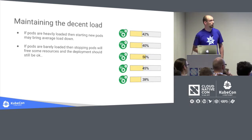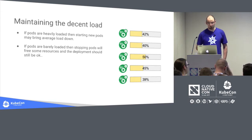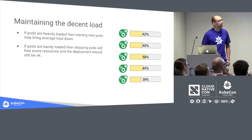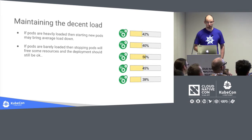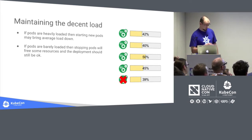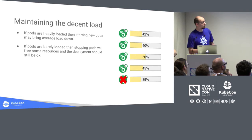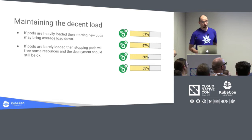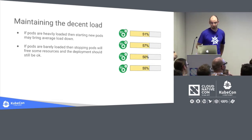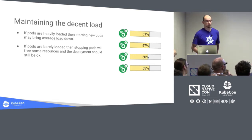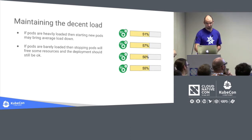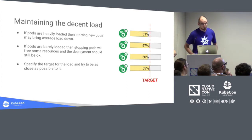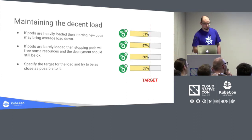Here is the case where pods are not so utilized — we have five running at 40 percent. One could say 60 percent of resources is wasted. So why not remove one pod? The others will take the traffic, utilization will decrease, and the freed space can be used by someone else.